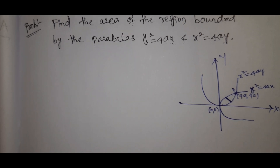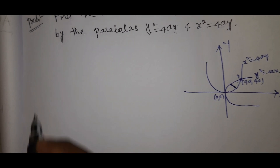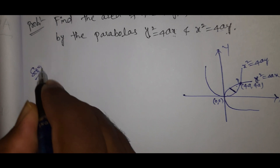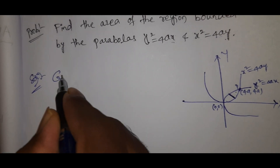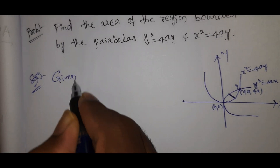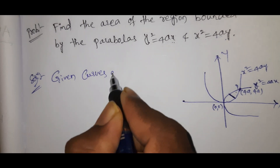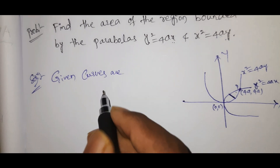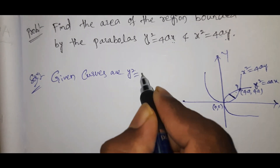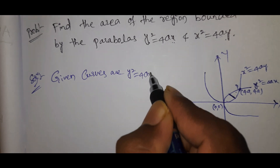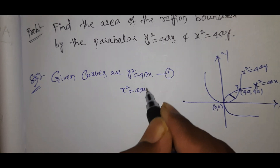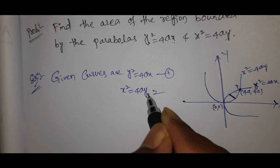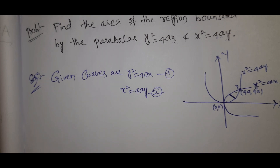This is the area we need to calculate. Solution: the given curves are y²=4ax — equation (1) — and x²=4ay — equation (2).